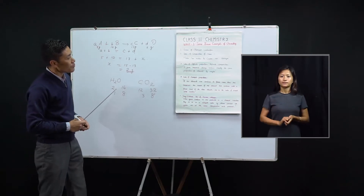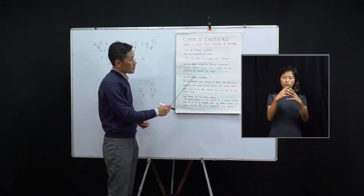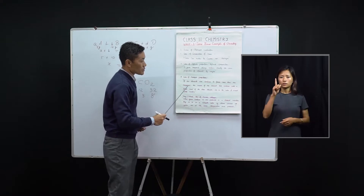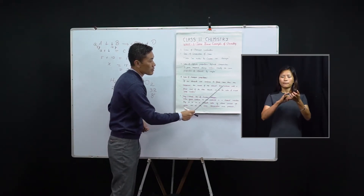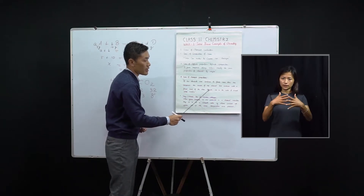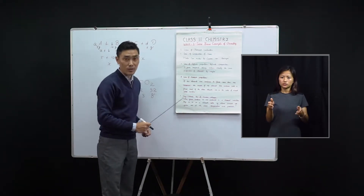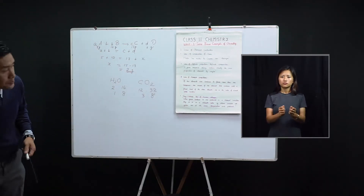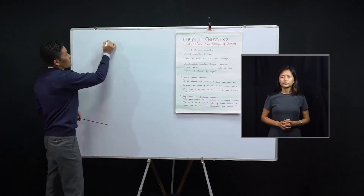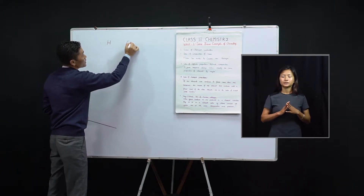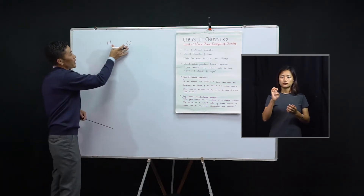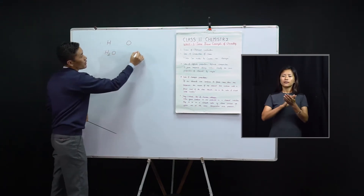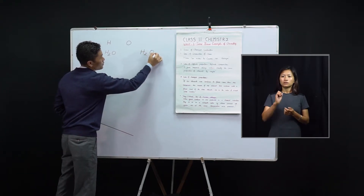The third law is the law of multiple proportions. According to this law, if two elements can combine to form more than one compound, the masses of one element that combine with a fixed mass of the other element are in the ratio of small whole numbers. For illustration: hydrogen and oxygen are two elements that can combine to form two different compounds — water (H₂O) and hydrogen peroxide (H₂O₂).